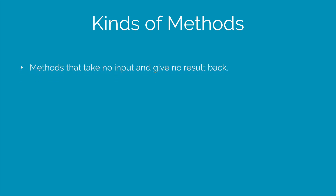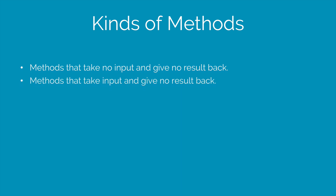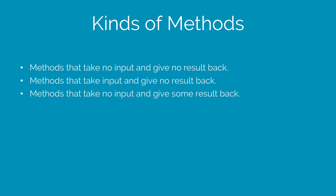The first one is the one that takes no input and gives no result back. Takes input, gives no result. Takes no input, gives some result. Takes input and gives some result. Now I know that was quite confusing, so let's take a look at each of these method types in detail.